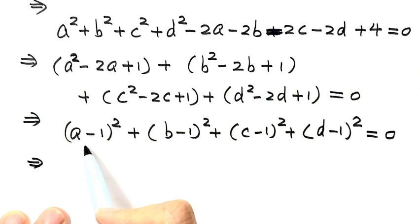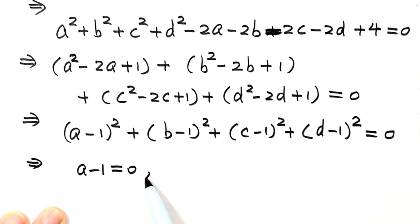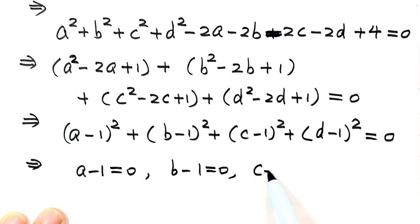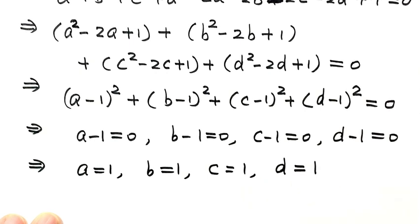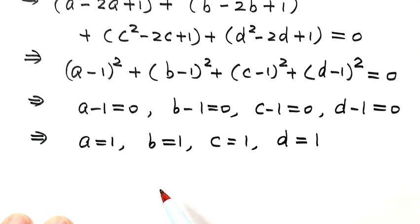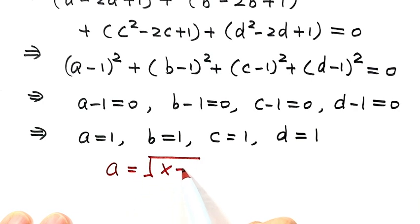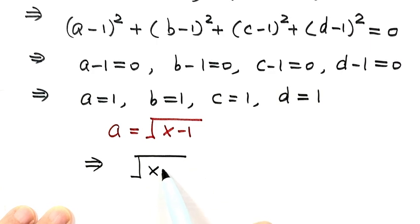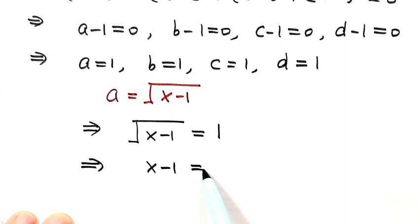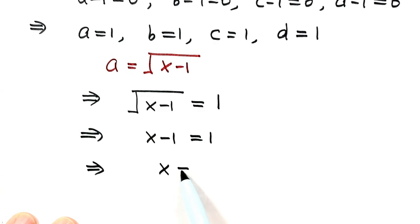So we have: a minus 1 equals 0, b minus 1 equals 0, c minus 1 equals 0, and d minus 1 equals 0. Therefore a equals 1, b equals 1, c equals 1, and d equals 1. Since we defined a as square root of (x minus 1), we get square root of (x minus 1) equals 1. Squaring both sides: x minus 1 equals 1, so x equals 2. Therefore x equals 2 is the solution. Thanks for watching.